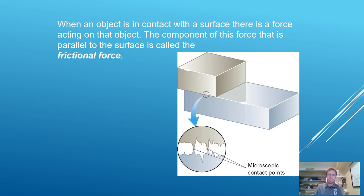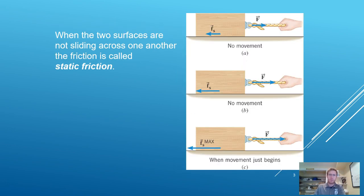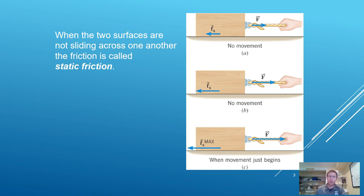Now let's dive into friction in more detail. There are actually two categories of friction: static friction and kinetic friction. Static force of friction is the force of friction when something is not moving. Kinetic force of friction is the force of friction when something is moving. These are different forces because you can have different magnitudes. In almost all cases, static force of friction at its maximum possible value is larger than kinetic friction.